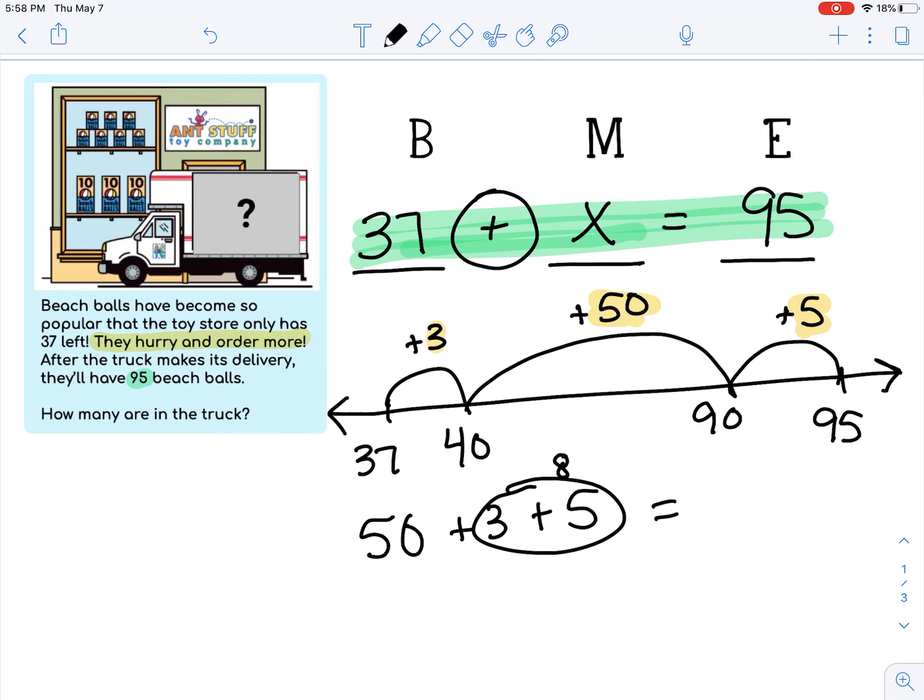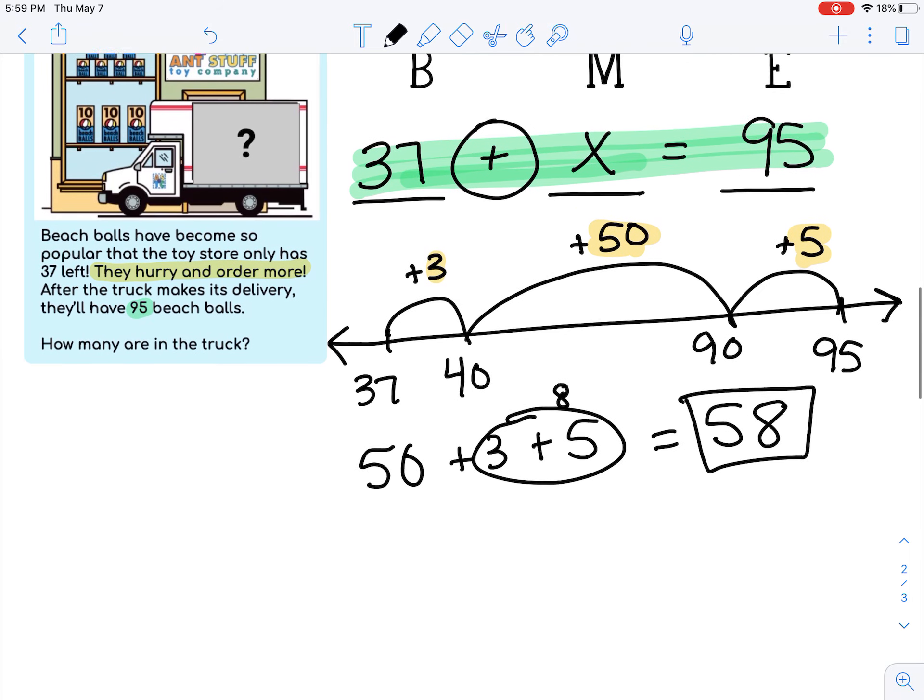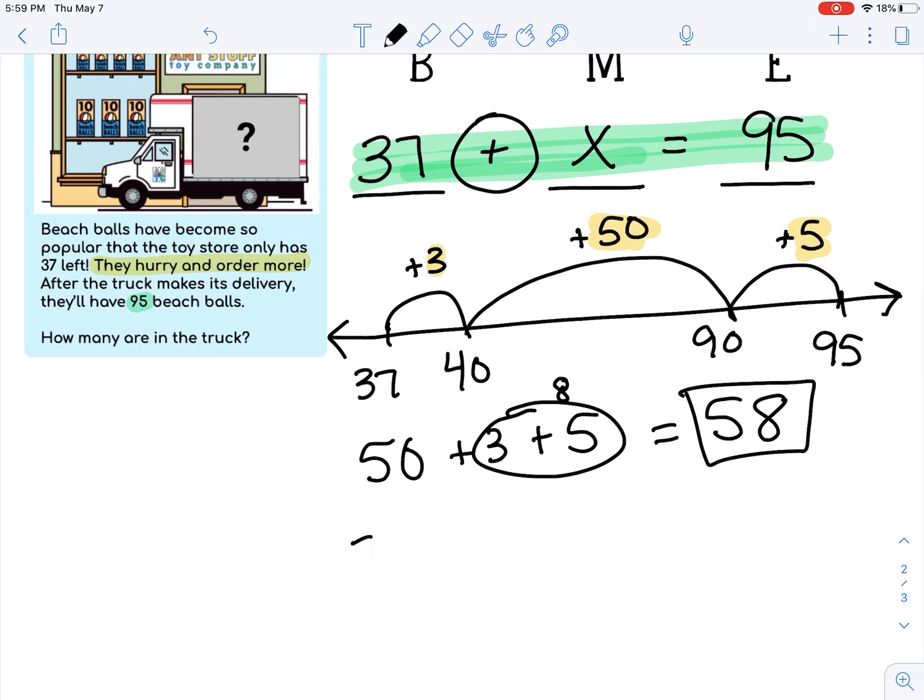So 50 plus 3 plus 5, I know 5 and 3 is 8, so 50 plus 8 equals 58. So then my equation would read 37 plus 58 equals 95. So x must equal 58. They had to have ordered 58 more beach balls in order for them to have 95 now total.